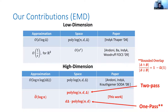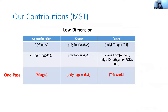We also give similar bounds for MST, and in fact our bounds for MST are even better. For the MST problem, in one pass with no conditions and only polylog(n, d, delta) space, we achieve an O-tilde(log n) approximation to the optimal cost — improving over the prior log(n)·log(d·delta) approximation from Indyk-Thaper and Andoni-Indyk-Krauthgamer.